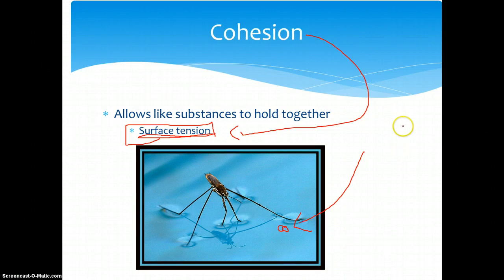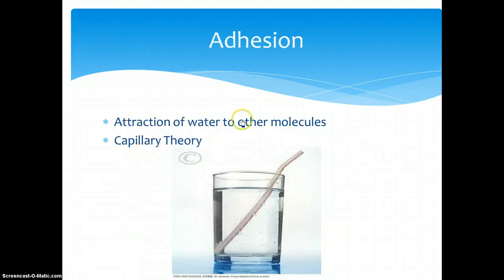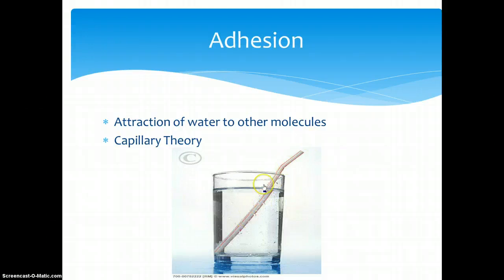Water moves as several molecules at a time. The next property we will be discussing is adhesion. Adhesion is described as the attraction of water to other molecules. In this example, we see a glass with a straw in it. Even before we drink out of this straw, tiny water molecules attract to the inside of the straw and slowly go up, actually making it easier for you to drink the water.